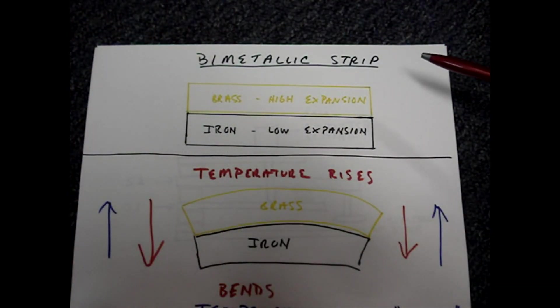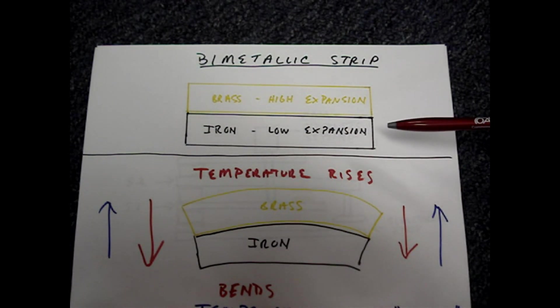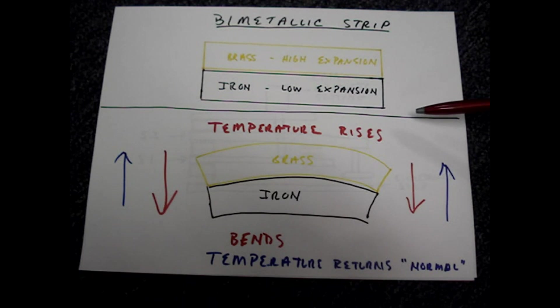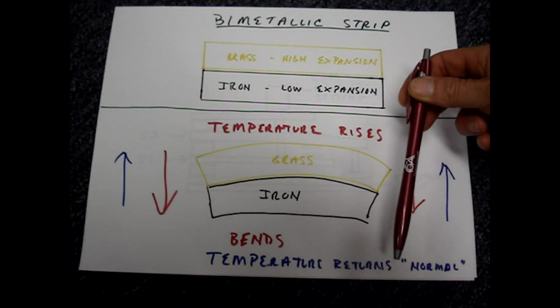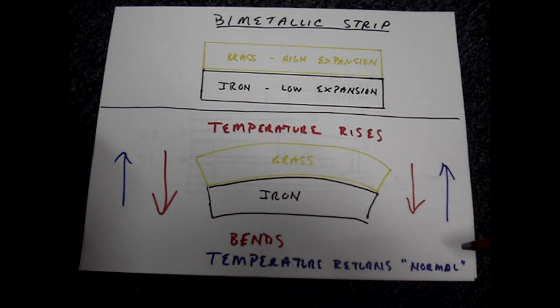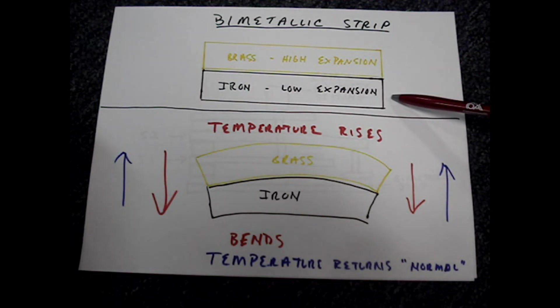Let's say our bi-metallic strip is made of brass and iron. Brass has a higher expansion rate than iron. As the temperature rises, the strip bends in this direction. When the temperature falls and returns to its original state, the strip returns to its straight position.